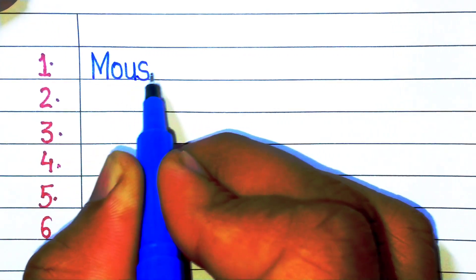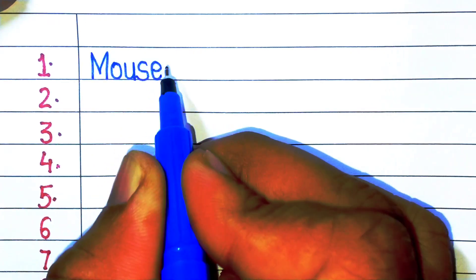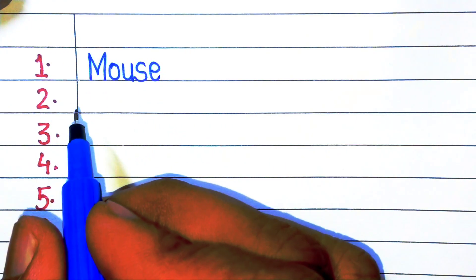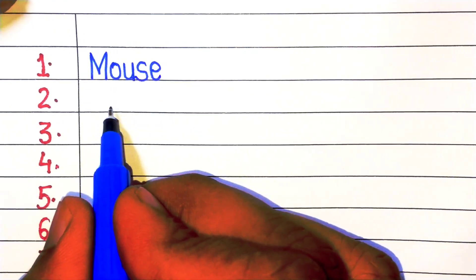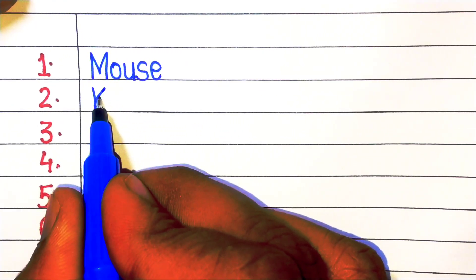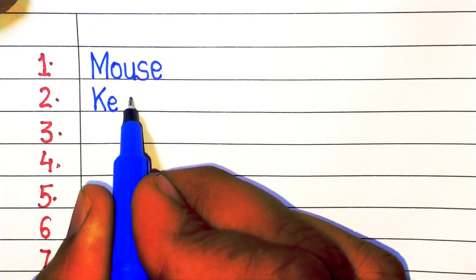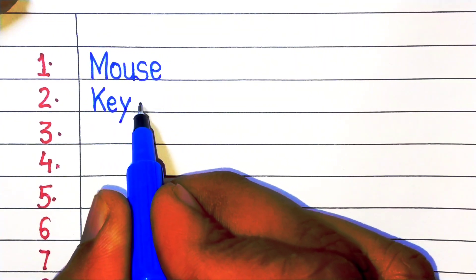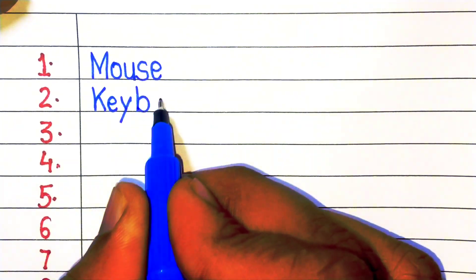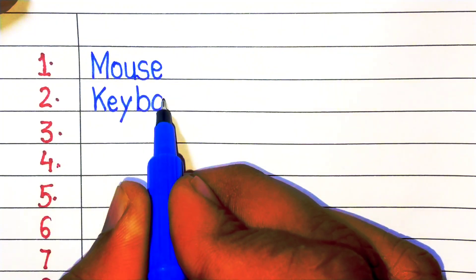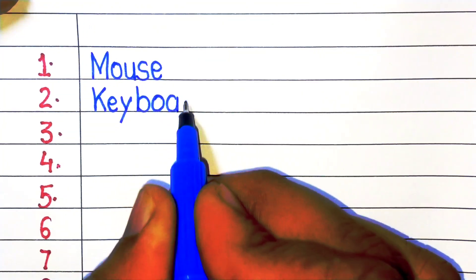Welcome to our channel. In this video we learn and write 10 names of input devices. First, number one: mouse. Number two: keyboard.